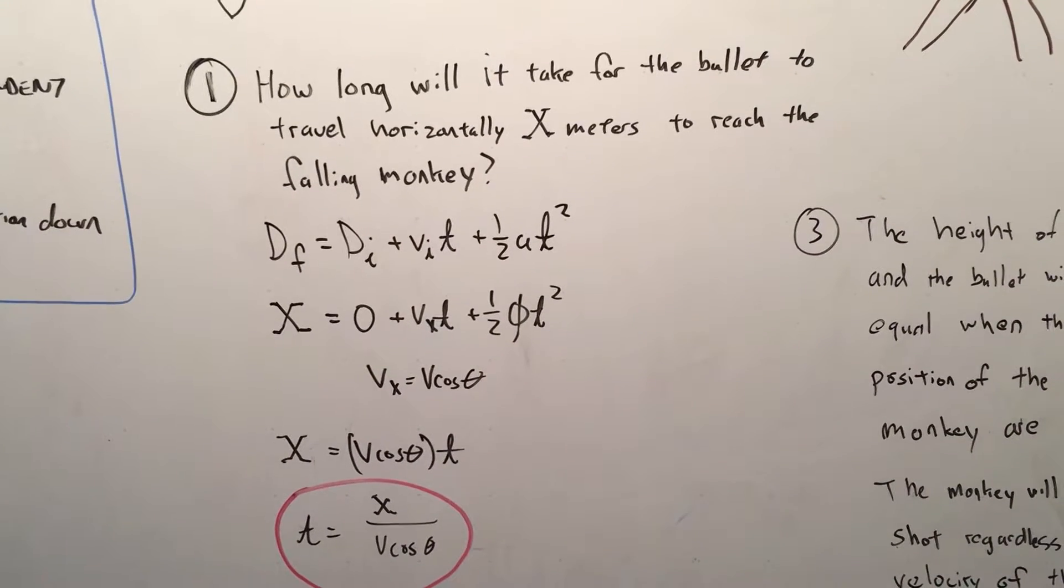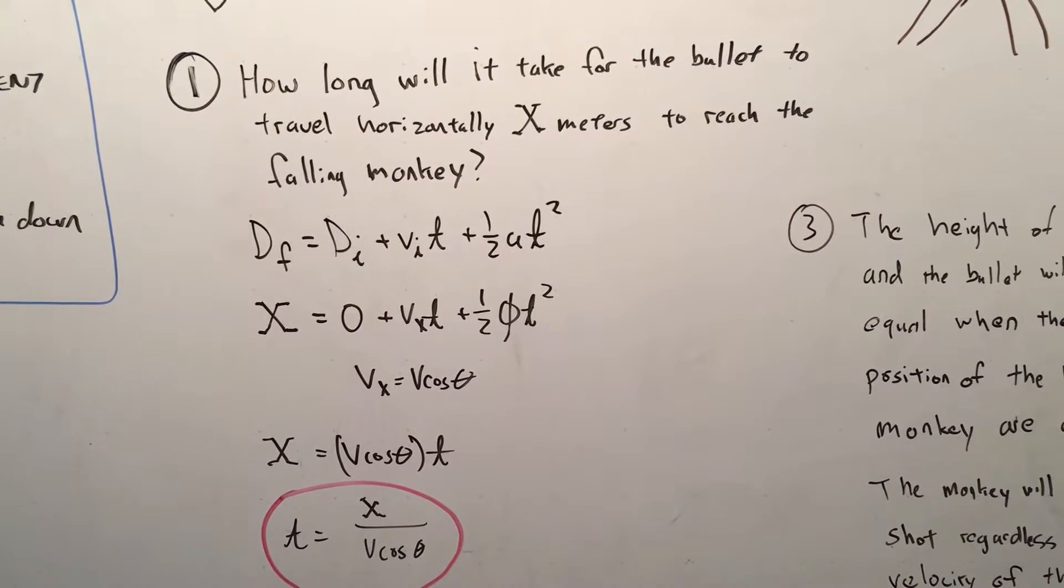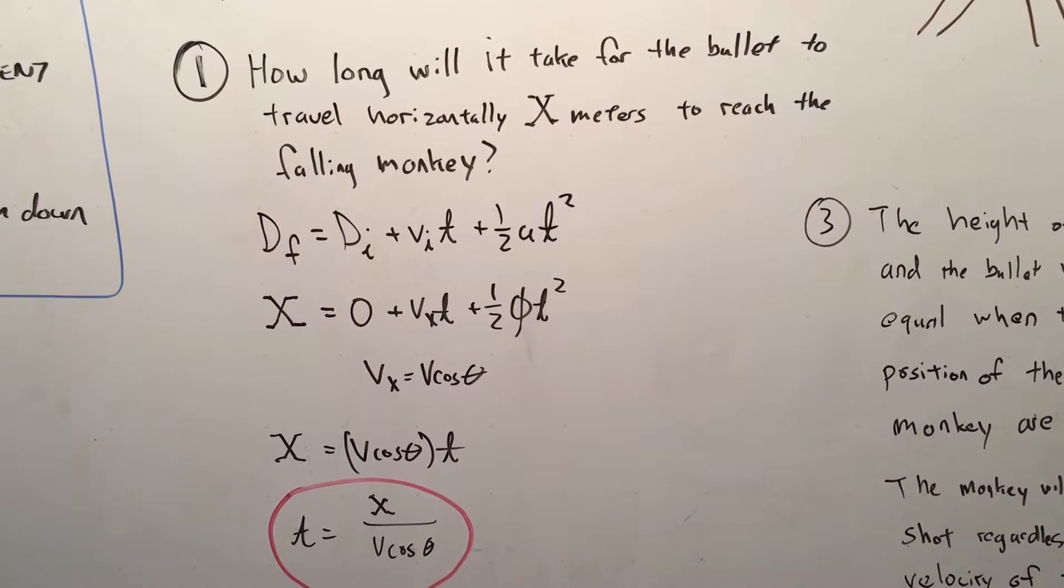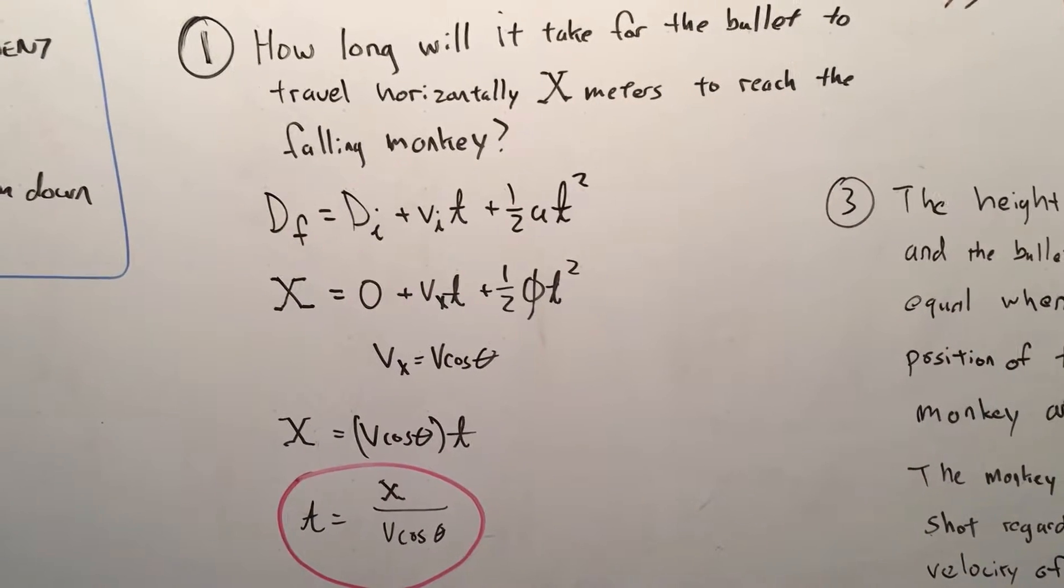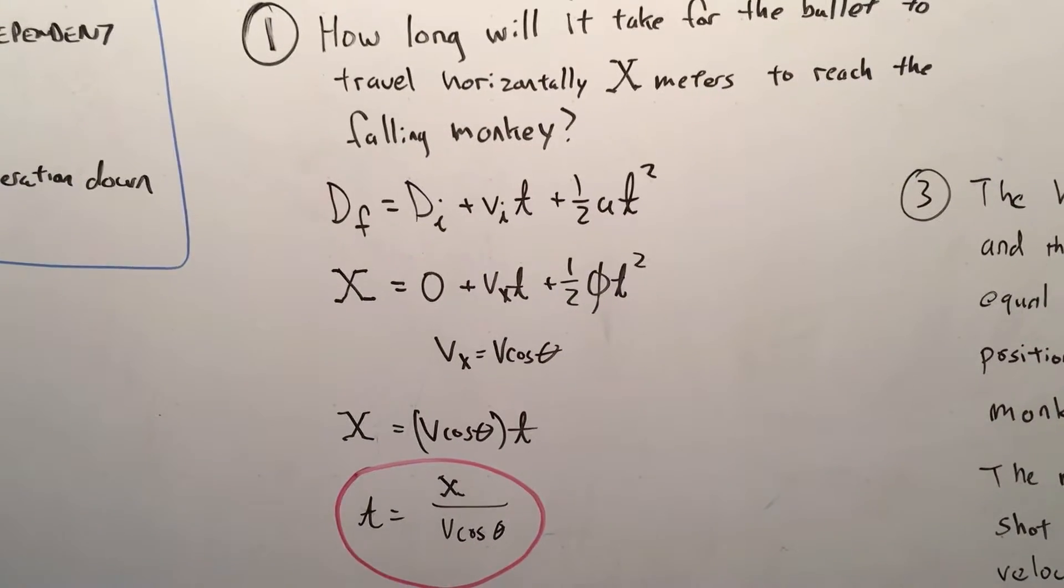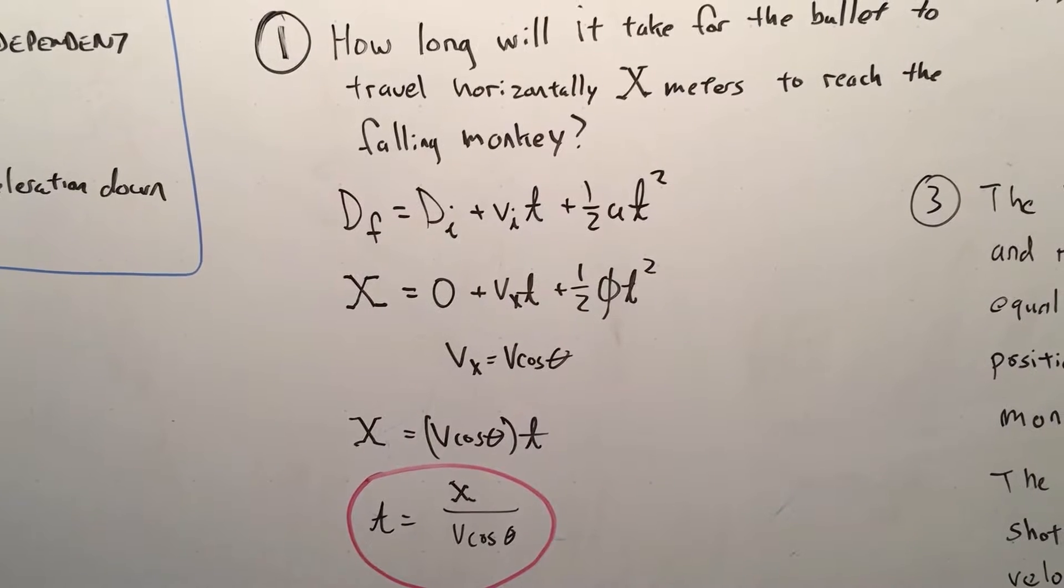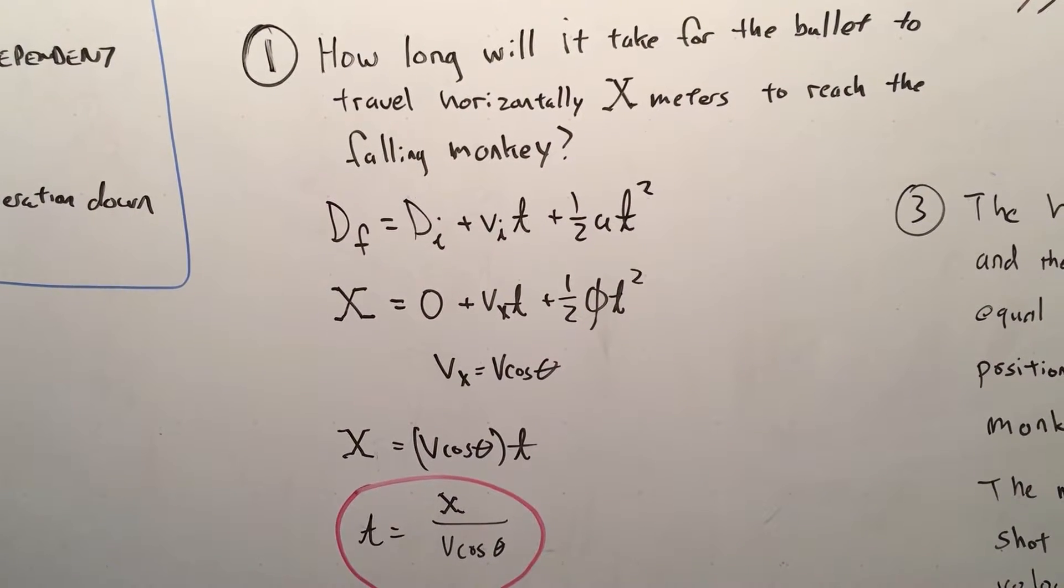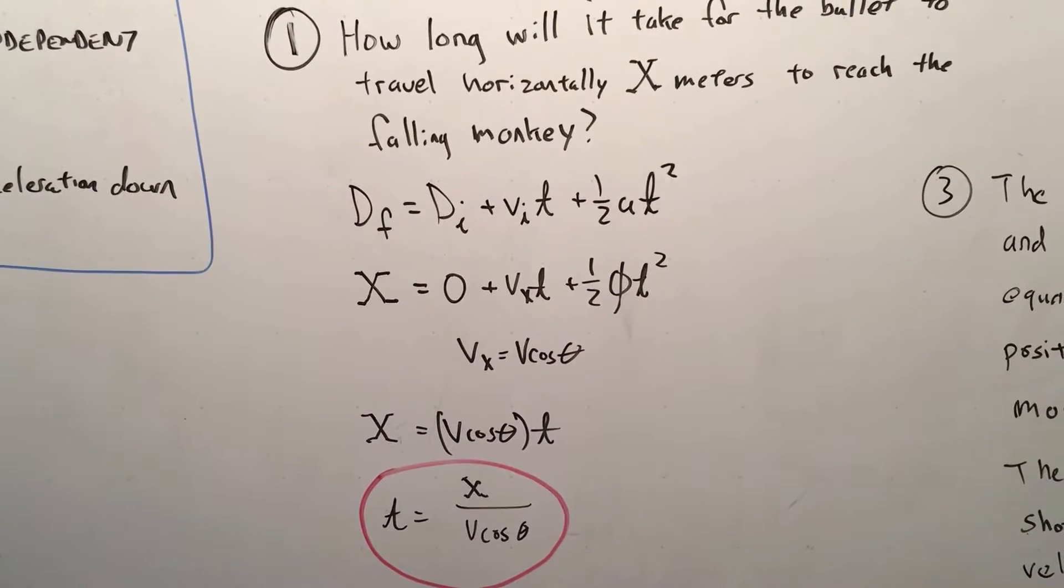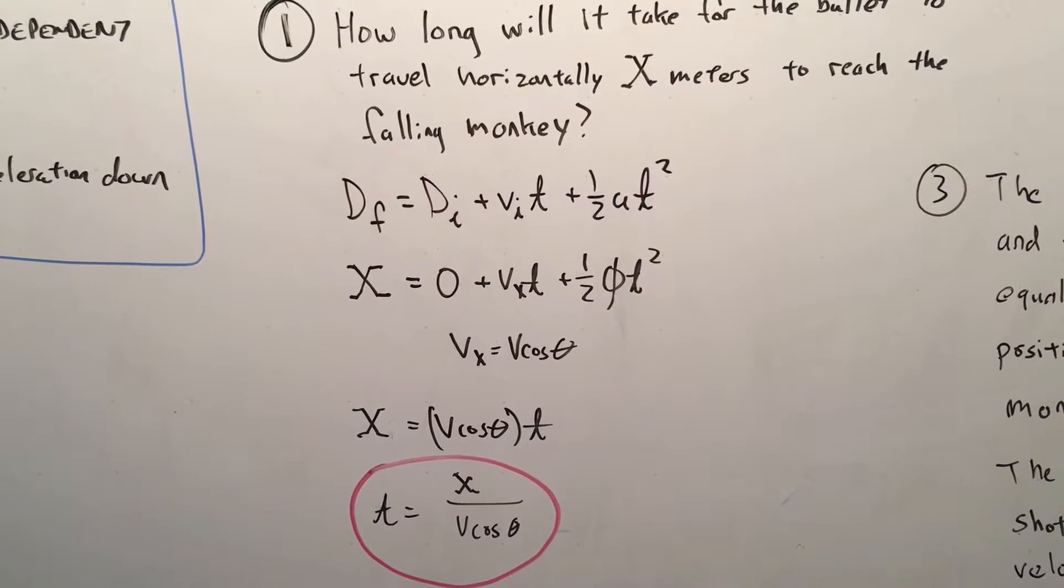So the first thing we want to do is figure out how long will it take for the bullet to travel horizontally X meters to reach the falling monkey. So use your simple distance equation. Distance final equals distance initial plus velocity initial times time plus one half acceleration t squared. So in this case, the distance final is going to be X.